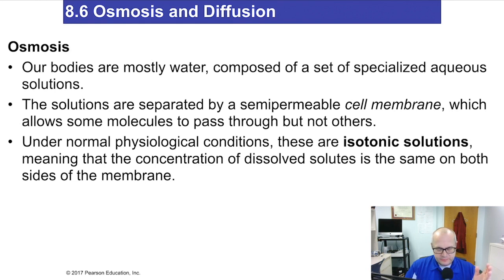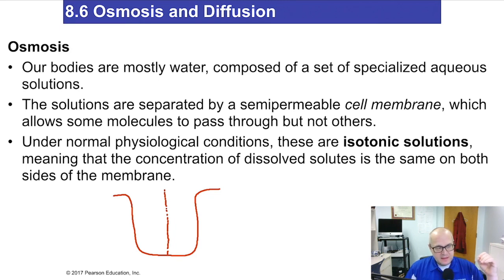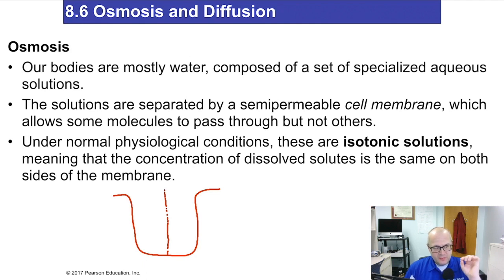Let's define osmosis. In a situation where you have a beaker, you put a semi-permeable membrane. A semi-permeable membrane is a piece of thin plastic with really tiny holes in it. Through those holes, water can pass from one direction to another. Water can freely move across the membrane without any problems.